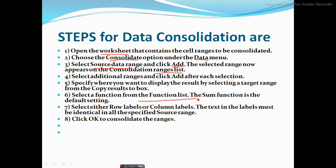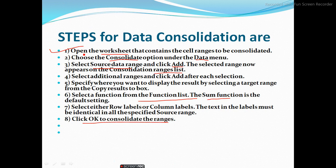Now select the function from the function list — we can apply subtotal, which is a combination of sum, average, maximum, and minimum. By default we have sum, as in Excel with AutoSum. Select either row label or column label; the text in the label must be identical in all specified source ranges. Then click OK to complete the consolidation.